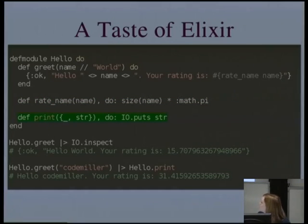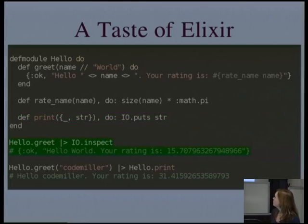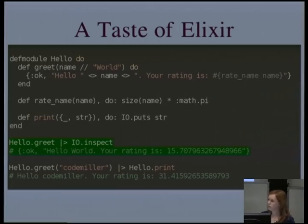The next function is doing a little bit of pattern matching — expecting a tuple, but we don't care what the first element is, so we're not binding it to any name, and then we're just doing a put string to standard out. At the bottom is this pipe, which is something Elixir has become fairly well-known for. It's like a Unix pipe — it takes the output of what's on the left and pipes it in as the first argument to what's on the right. So we're calling that hello greet function, which uses the default parameter of world, then sending that to io.inspect, which allows you to print a variable. And then also calling it with the value code_miller and printing that out.